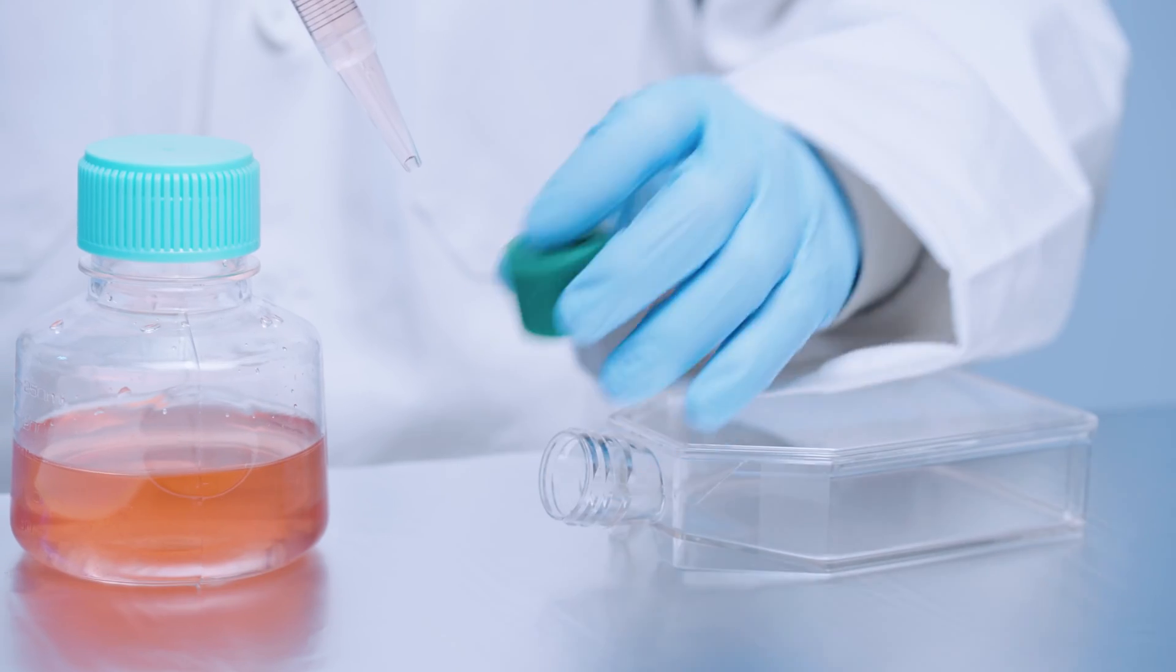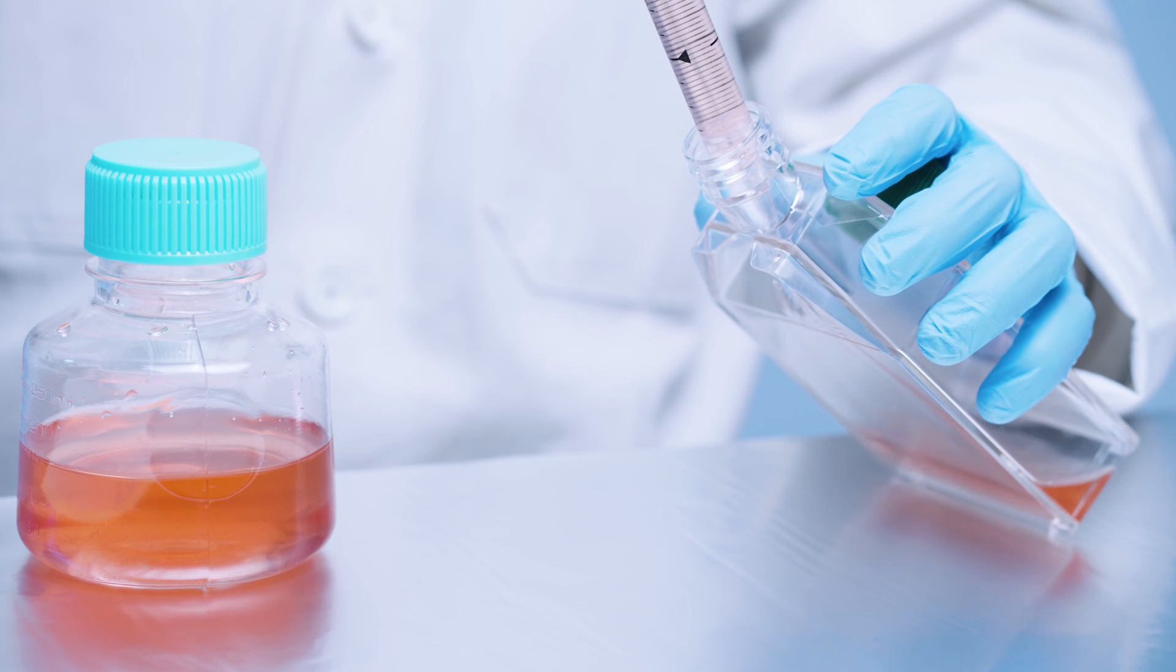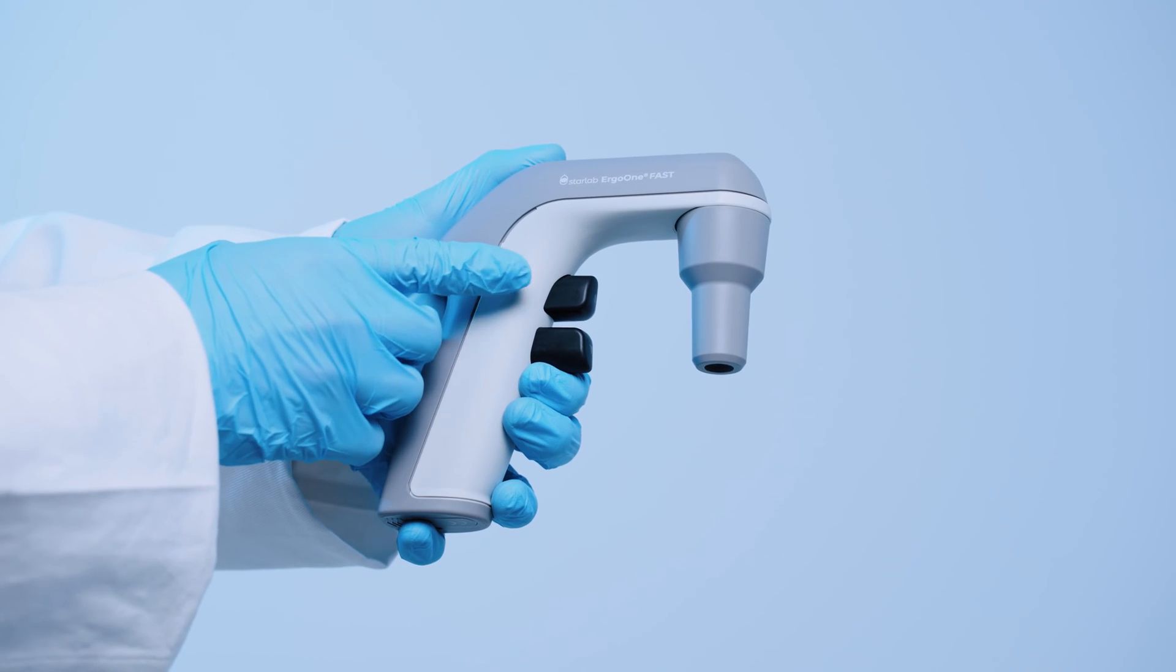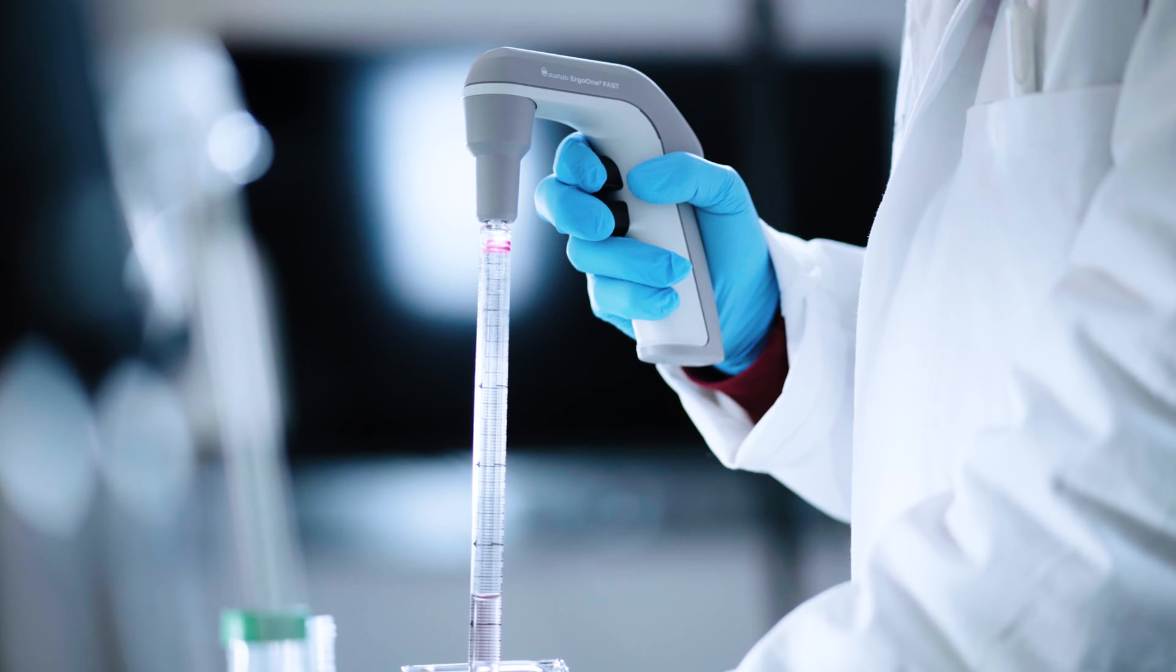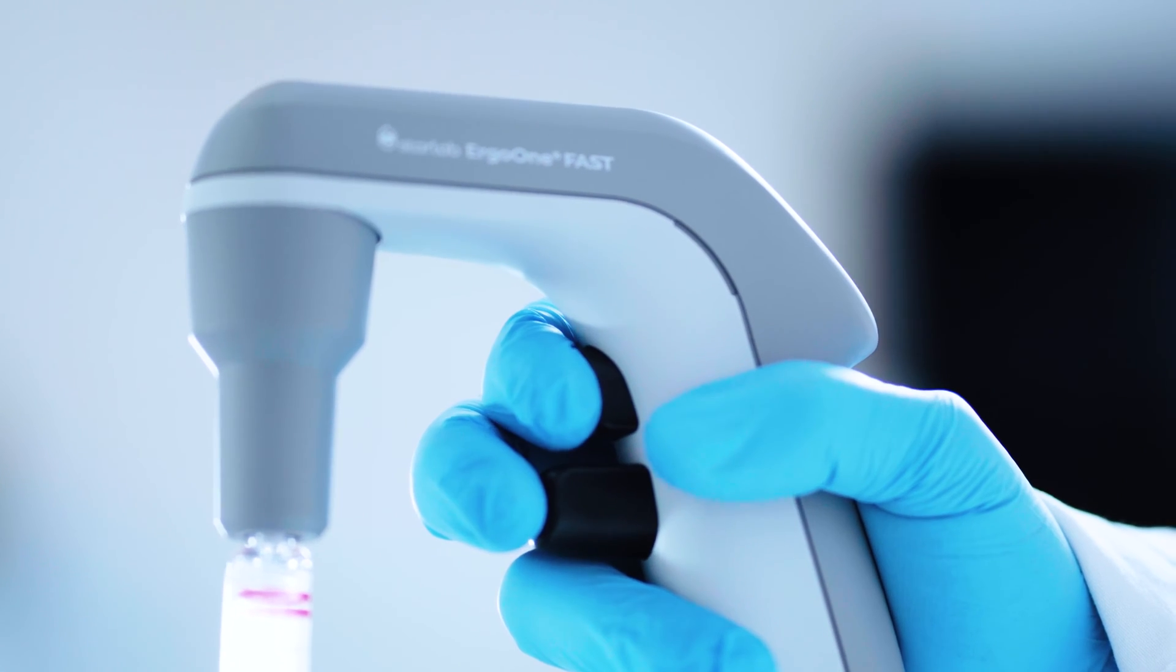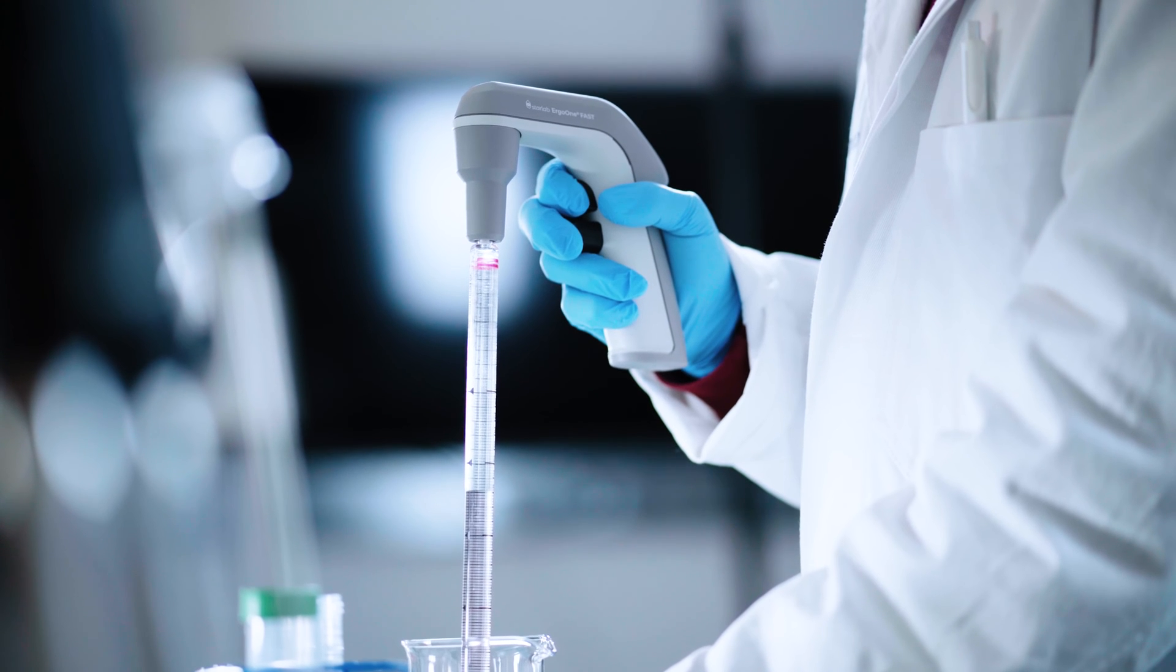The ErgoOne Fast is super easy to use. Let's walk through how to easily regulate the dispensing speeds with the user-friendly pressure-sensitive control buttons. Gently does it for slower aspirating. Just press more if you want to go faster. It's that easy.